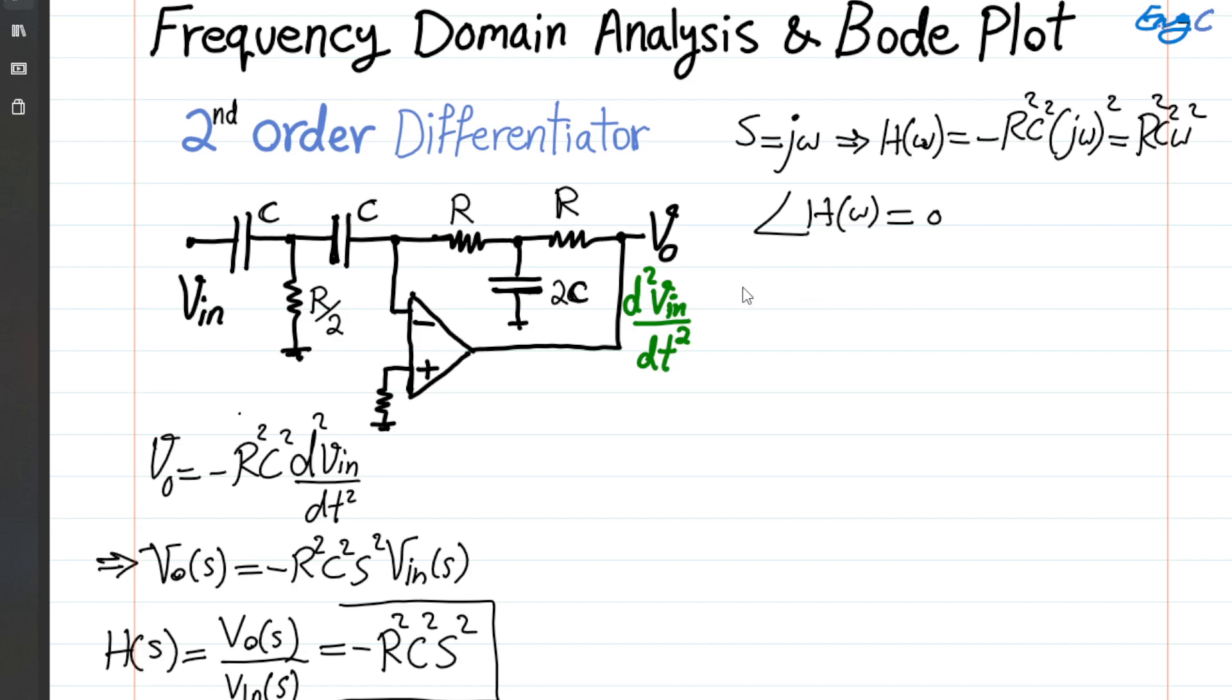The only thing we're going to focus is the log scale, 20 log base 10 of magnitude of H ω, which is the magnitude frequency response, and in that case you can see that if we take the 20 log out of this, we have 40 log, so take the 20 log out of R squared C squared ω squared.